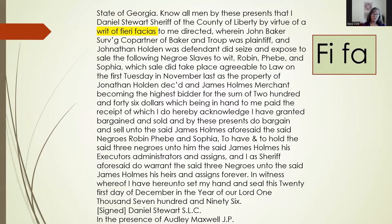This record tells us that Jonathan Holden had died, and that John Baker — the surviving co-partner in a business called Baker and Troop — had sued the estate and won. The sheriff seized Robin, Phoebe, and Sophia, who were enslaved people, to pay off that debt and put them up for public auction at the Riceboro Courthouse. James Holmes, a merchant, was the highest bidder, and so the sheriff wrote up this deed of conveyance — just as in the one we saw earlier, he warrants that he will defend Holmes' claim to them if it were to be challenged.